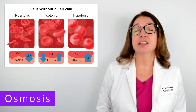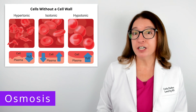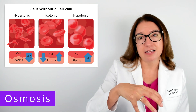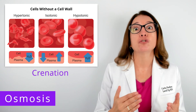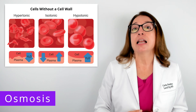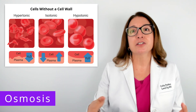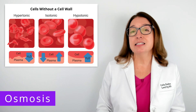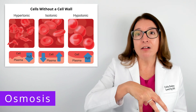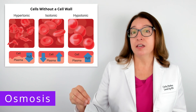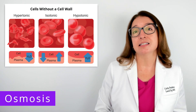For a cell without a cell wall, such as a red blood cell, if the cell is in a hypertonic solution, the solute concentration is greater outside the cell than inside, so water will move via osmosis out of the cell, causing crenation or shriveling due to dehydration. In an isotonic solution, solute concentration is the same inside and outside, so there's no net movement of water. In a hypotonic solution, solute concentration is greater inside the cell, so water moves into the cell, causing the cell to expand, swell, and eventually lyse or burst.